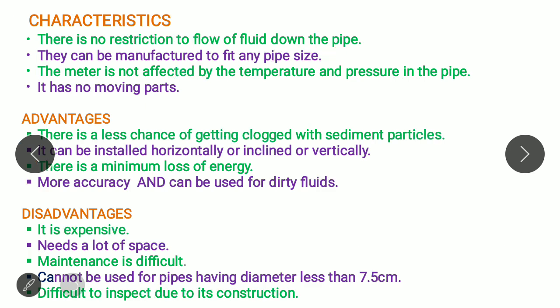A few characteristics that are inherent part of Venturimeter are, number one, there is no restriction to the flow of fluid down the pipe. They can be manufactured to fit any pipe size and the meter is not affected by the temperature and pressure in the pipe. It has no moving part. What it actually depends upon is square root of 2gh that is the pressure head difference, and the gravitational constant and frictional constant Cd, as we have discussed already in the formula and the derivation.